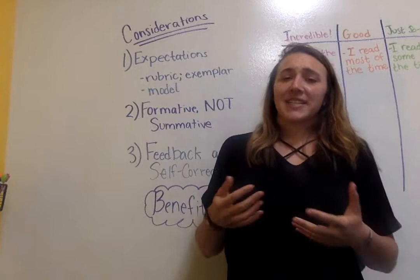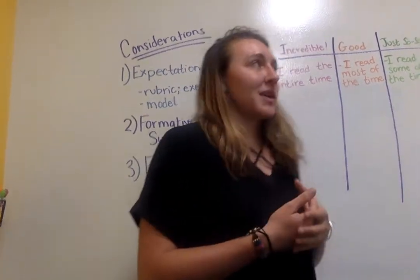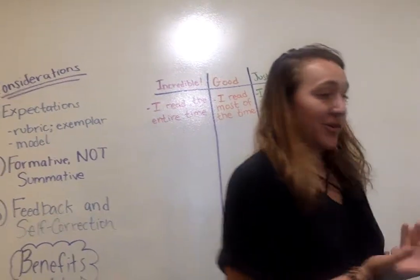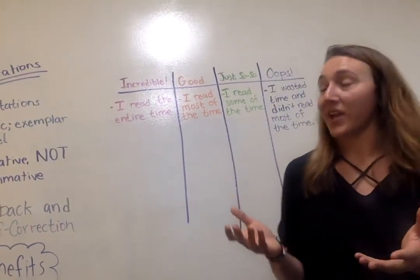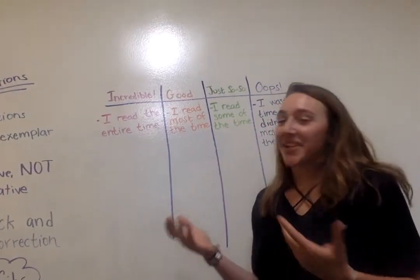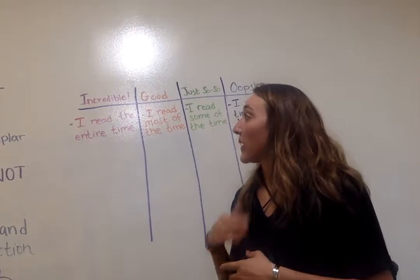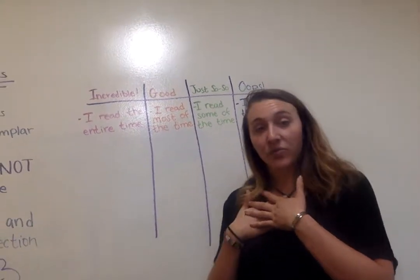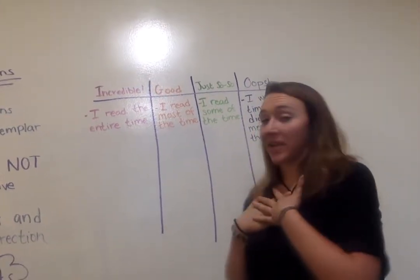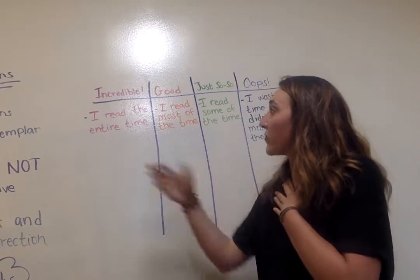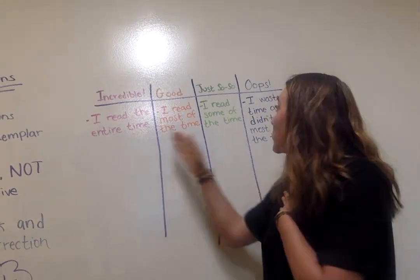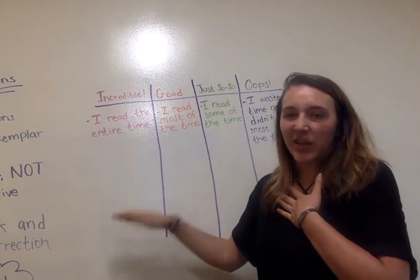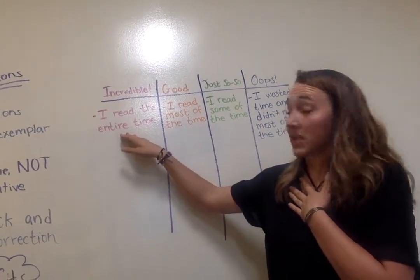To provide an example from my own classroom: I noticed that my third graders were really struggling with silent reading time. So I provided them with a rubric to self-assess their own silent reading time. This rubric went from 'incredible' to 'oops,' and had several criteria, but I want to focus on one specific skill.